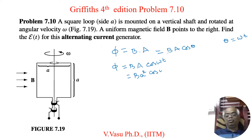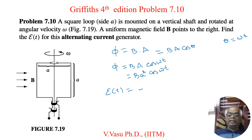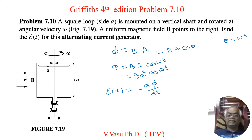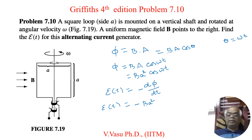So Phi equals BA cos(omega t). Now by Faraday's flux rule, the induced EMF as a function of time is equal to negative d(Phi)/dt. Here B and A squared are constant, so only the time-dependent term is cos(omega t). If you differentiate cos(omega t) you will get minus sine(omega t). Differentiating with respect to t also brings down a factor of omega.